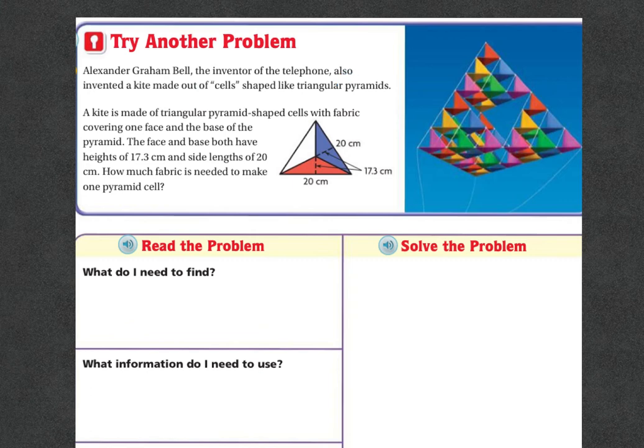Alexander Graham Bell, the inventor of the telephone, also invented a kite made out of cells shaped like triangular pyramids. A kite is made of triangular pyramid shaped cells with fabric covering one face and the base of the pyramid. The face and the base both have the height of 17.3 centimeters, the side lengths of 20 centimeters. How much fabric is needed to make one pyramid cell?